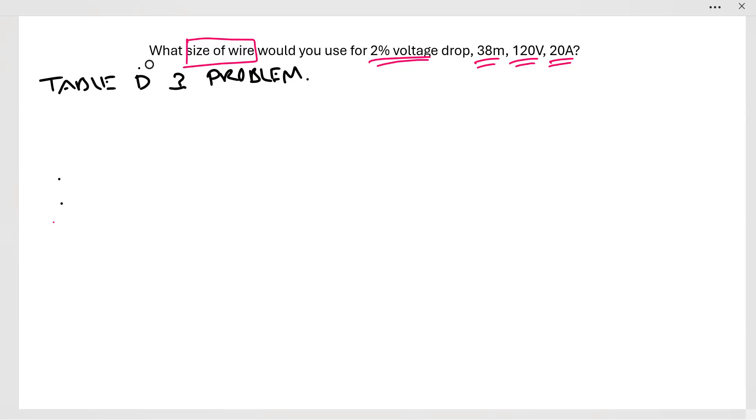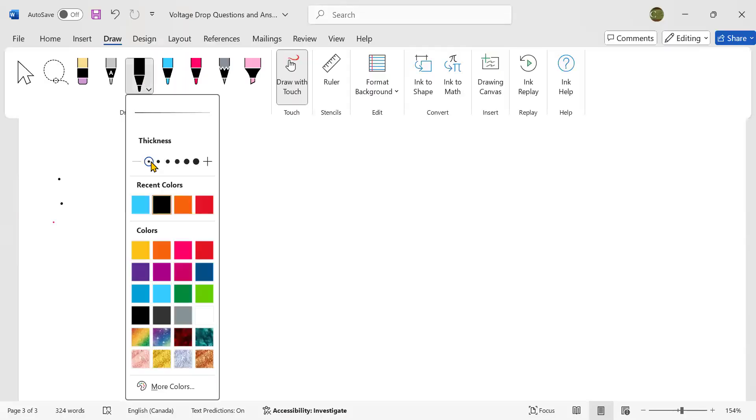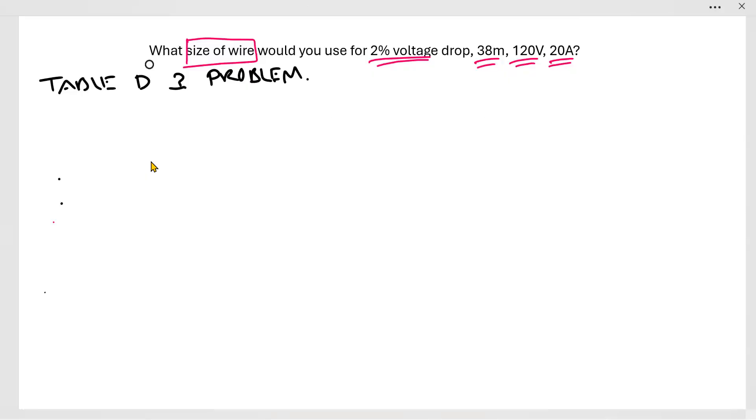From that table, really all the voltage drop calculations that you're going to be doing use the same equation. I like to simplify things and write that equation in a format where we can just solve anything with it. It's not written exactly like this in the code book, but I like to simplify it to exactly this: 1000 meters per kilometer times voltage drop. In the code book they write this various different ways, but really they're just solving for different variables in this same equation. The equation is 1000, which is a conversion between meters and kilometers, times voltage drop equals a K value.